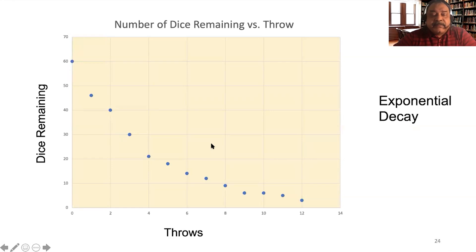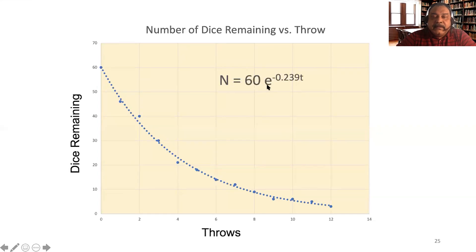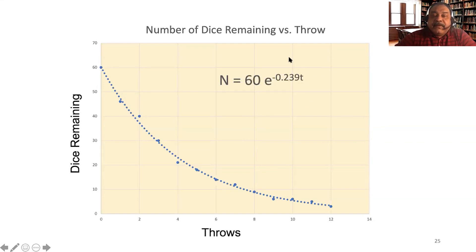The way to get the half-life from this exponential decay is to fit it to an exponential function. Using Excel, I fit the data and the equation of the fit is: N = 60 · e^(−0.239 · T), where N is the number of dice remaining and T is the number of throws. Notice that when T = 0, e^0 = 1, so N = 60 — that's the starting point. Because of the negative exponent, as T gets larger, N gets smaller and smaller.